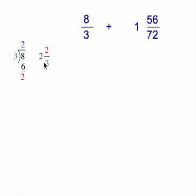The remainder is our numerator. Our old denominator is our new denominator. The denominator, the bottom number, does not change. The whole number is the quotient. So we get 2 and 2 thirds.